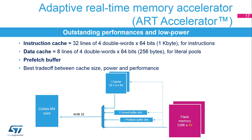The ART Accelerator brings outstanding performance and reduces dynamic power consumption. It consists of a 1 kilobyte instruction cache, 256 bytes of data cache, and a pre-fetch buffer. The instruction cache contains 32 lines of 4 double words, and the data cache has 8 lines of 4 double words. Once all the instruction cache memory lines have been filled, the LRU (Least Recently Used) policy is used to determine the line to replace in the instruction memory cache.